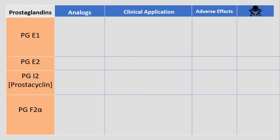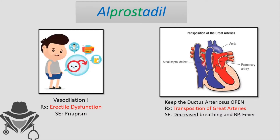We will put the prostaglandins on the left side of the table, and for every single one we will discuss the drugs that act as analogues, their clinical applications, adverse effects, and memory hacks. Let's start with prostaglandin E1. The first drug we're going to discuss is alprostadil, a prostaglandin E1 analogue.